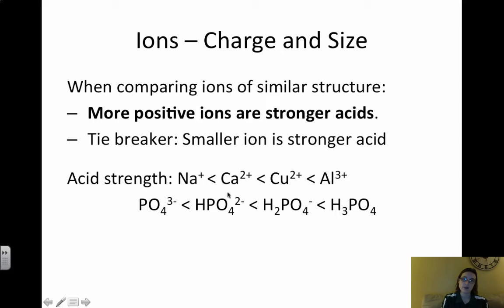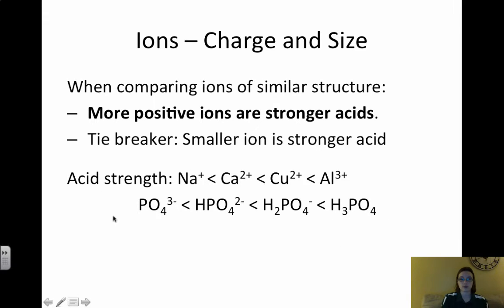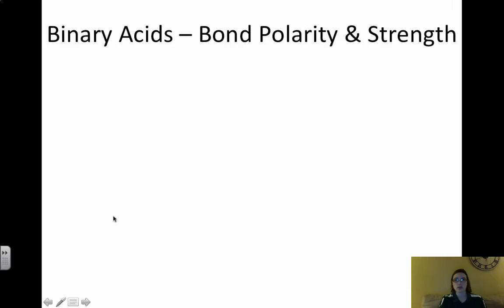We can do the same thing with anions. Whether it's an anion, a cation, or a neutral molecule, the more positive the species, the stronger the acid. So H3PO4 is the strongest acid, and PO4³⁻ is the weakest.